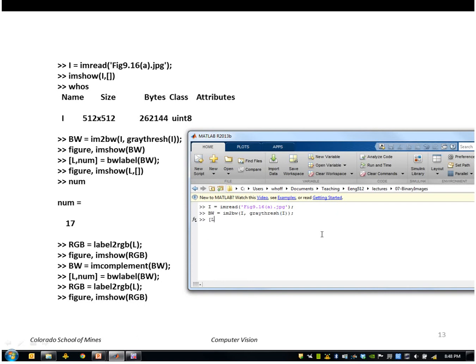Then we'll call MATLAB's BWLabel function and that will return a label image and the number of labels. In this case is 17. So there are 17 white regions that are found.